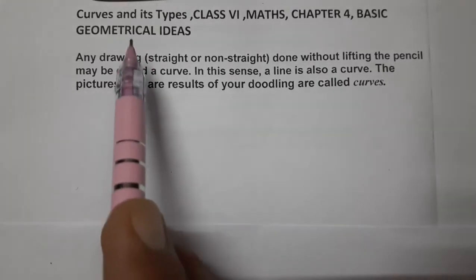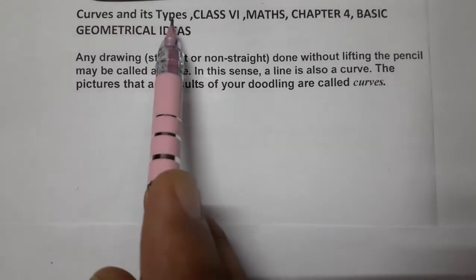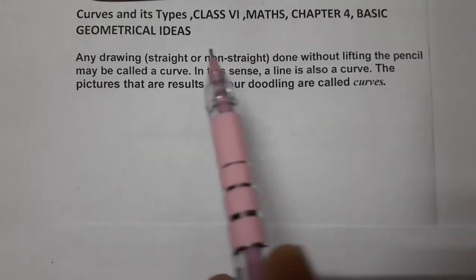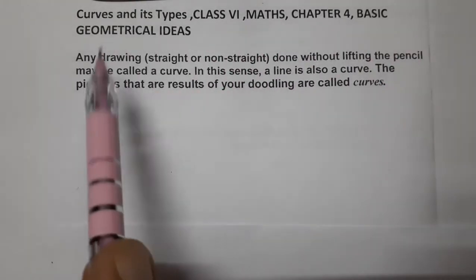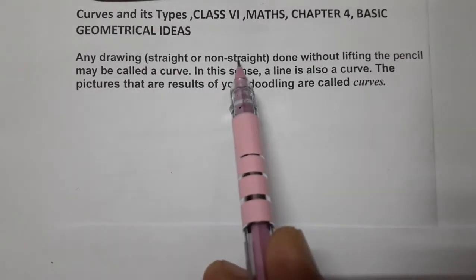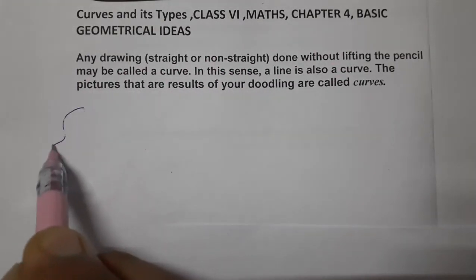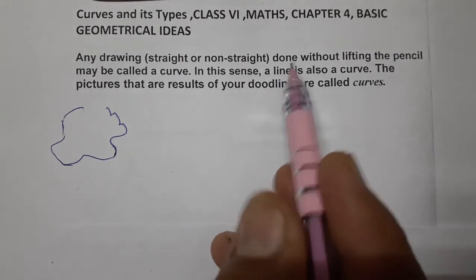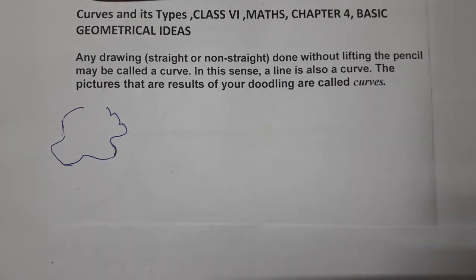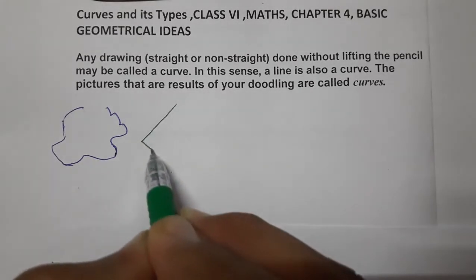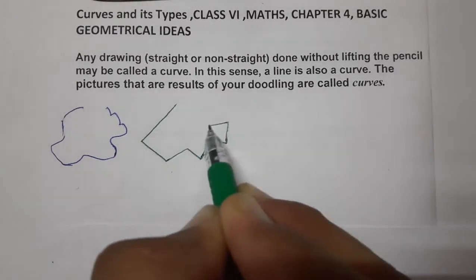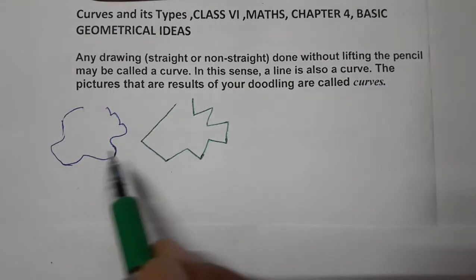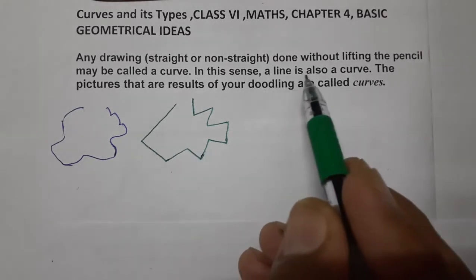Hello students, today we are going to learn about curves and its types — Class 6 Math, Chapter 4: Basic Geometrical Ideas. Any drawing, straight or non-straight, done without lifting the pencil may be called a curve. So this is a curve, and this is also a curve. In this sense, a line is also a curve.